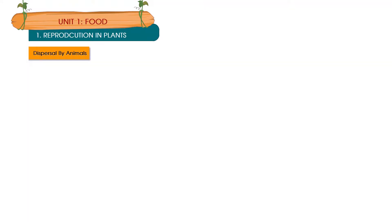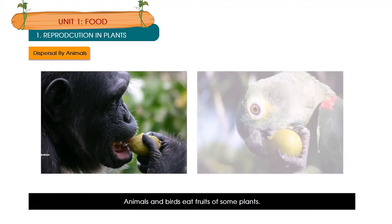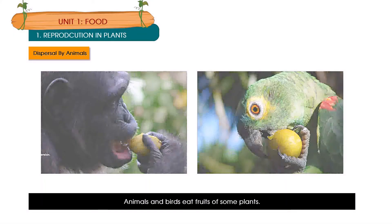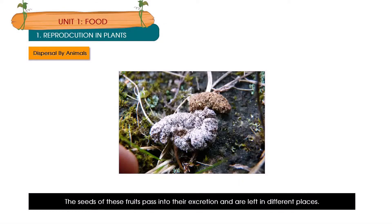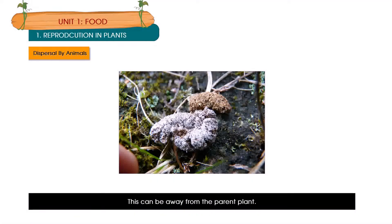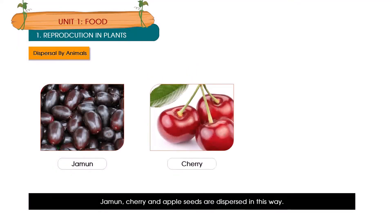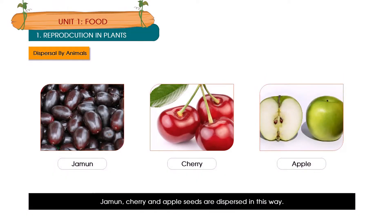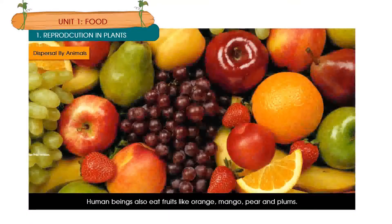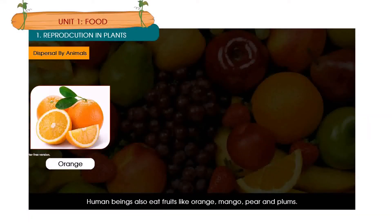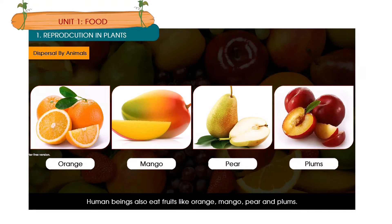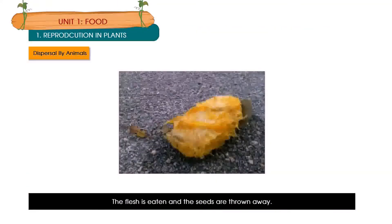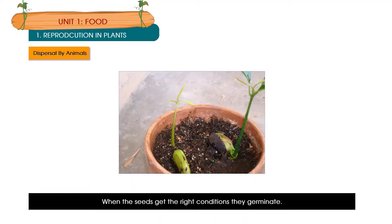Dispersal by animals: Animals and birds eat fruits of some plants. The seeds of these fruits pass through their excretion and are left in different places, away from the parent plant. Jamun, cherry and apple seeds are dispersed in this way. Human beings also eat fruits like orange, mango, pear and plums — the flesh is eaten and the seeds are thrown away. When the seeds get the right conditions, they germinate.